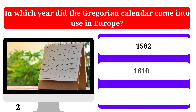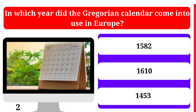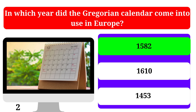In which year did the Gregorian calendar come into use in Europe? 1,582, 1,610, or 1,453. The correct answer is 1582.